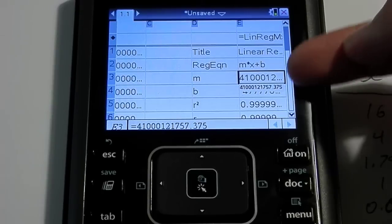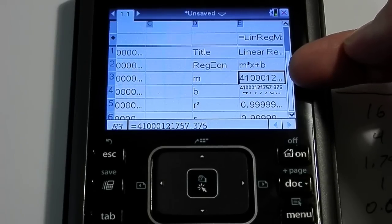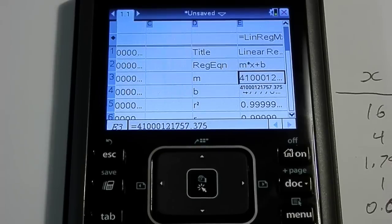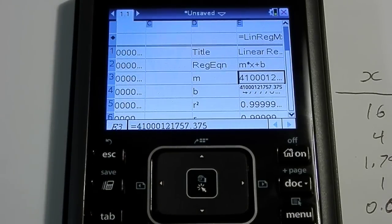Now, one thing you do have to be careful of is, it does cut a few things off because of the size of the cells. So, if you need to, you might have to just scroll over, you know, depending on the values you're getting.